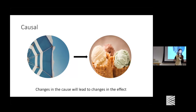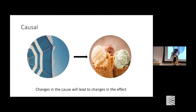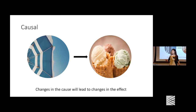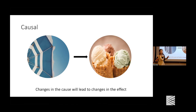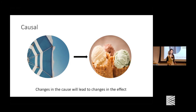Let's think about what 'causal' means. We talk about this word all the time. For example, being sunny causes ice cream consumption to rise — not the other way around. No matter how much ice cream I eat, the weather won't improve. Causal tells us: if we actually change the cause, something will happen in the effect.